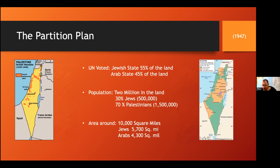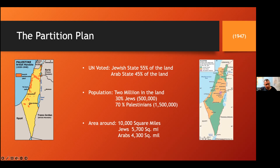In 1947, the British government announced that it intended to give up the mandate and hand the whole problem of Palestine to the United Nations. The United Nations General Assembly approved a partition plan by a vote of 33 to 13 with 10 abstentions — largely through the influence of the USA. The UN voted to create two separate states: a Jewish state covering 55 percent of the land and an Arab state covering the remaining 45 percent. While the Jews in Palestine appeared to accept the plan initially, the Palestinian Arabs totally rejected it, and more war broke out with both sides increasing their terrorist activities.